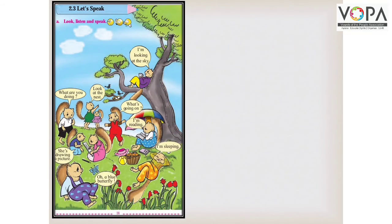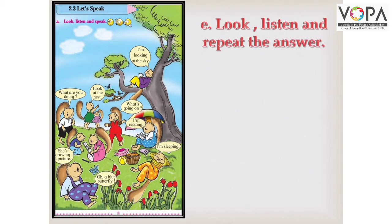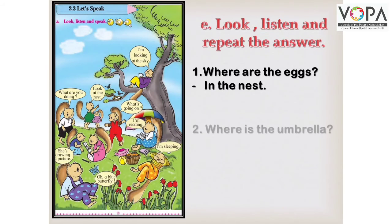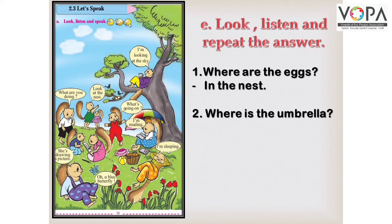On page number 18, Point E: Look, listen and repeat the answer — देखो, सुनो और जवाब को दोहराओ। First question: Where are the eggs? अंडे कहाँ हैं? The answer — आपको भी मेरे साथ repeat करना है — 'In the nest.' Repeat: In the nest. Second: Where is the umbrella? छाता कहाँ है? Repeat after me: Under the tree. Under the tree.